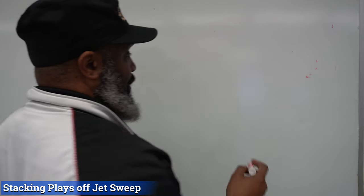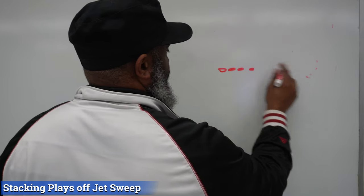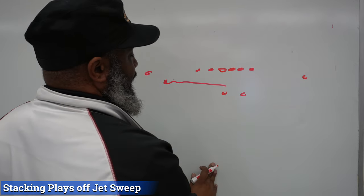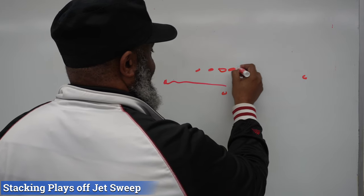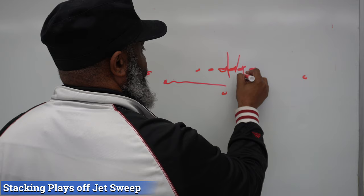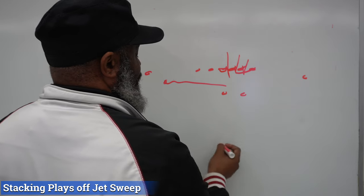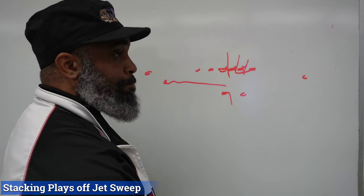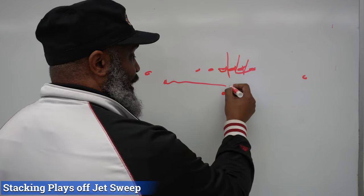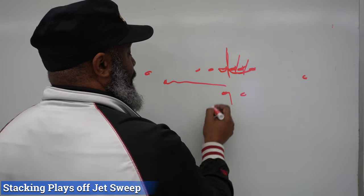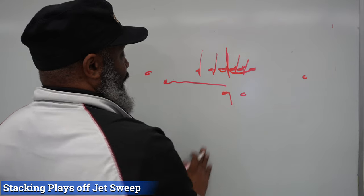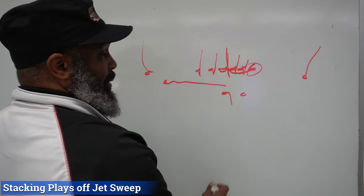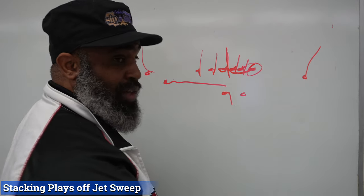Lastly, another screen I really like: fake jet sweep with a tight end middle screen. The motion man fakes the sweep, everybody blocks like it's jet sweep, the linemen let the pass rushers go straight upfield, and your tight end folds behind them for a middle screen. You use your screening steps — invite the guys through — then hit the tight end right behind them. All five linemen are in the screen. Especially effective if you've got a mobile tight end like Likely, Kelce, or any of those tight ends who are really just big receivers.